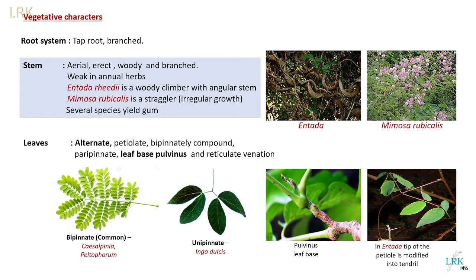Regarding leaves, leaves are alternate — from each node only one leaf develops. They have a petiole, and are bipinnately compound. The primary rachis is again divided into secondary rachis, and leaflets are seen on the secondary rachis. Such leaves are called bipinnately compound leaves. These bipinnately compound leaves are paripinnate — meaning they end with an even number of leaflets. Examples are Caesalpinia and Peltophorum.